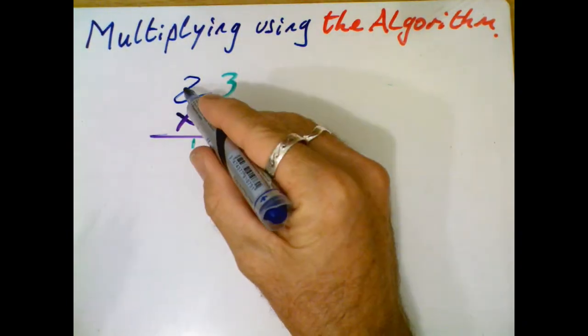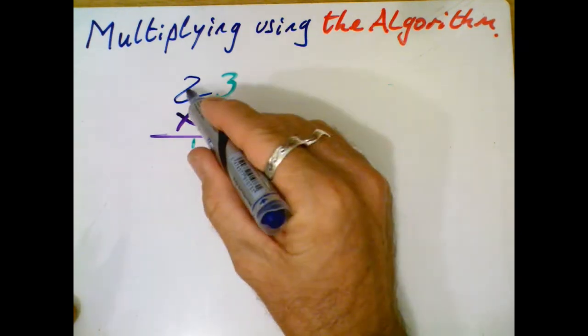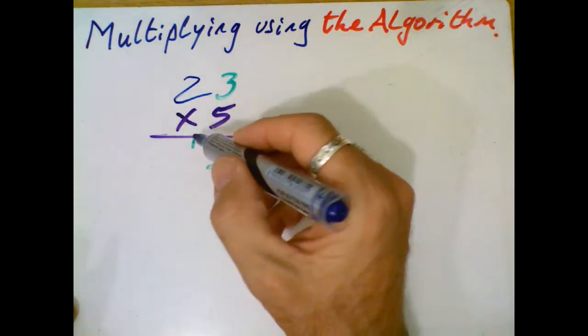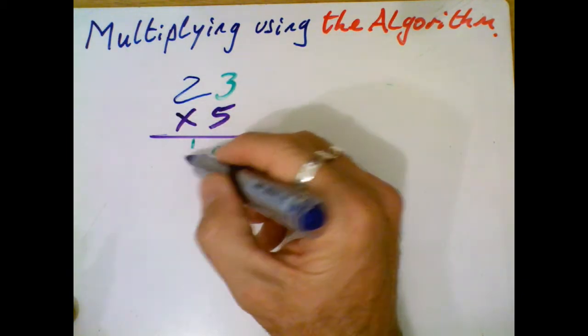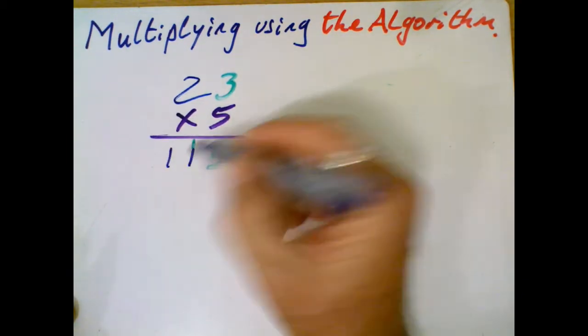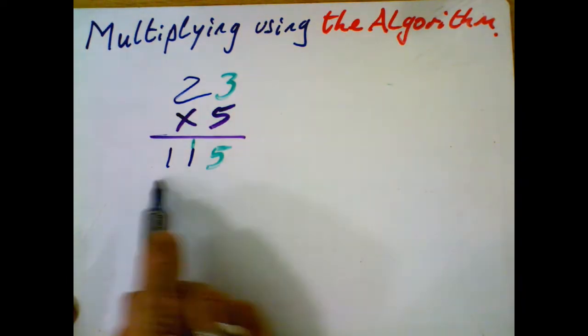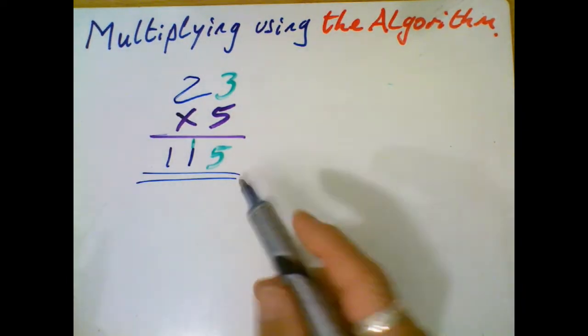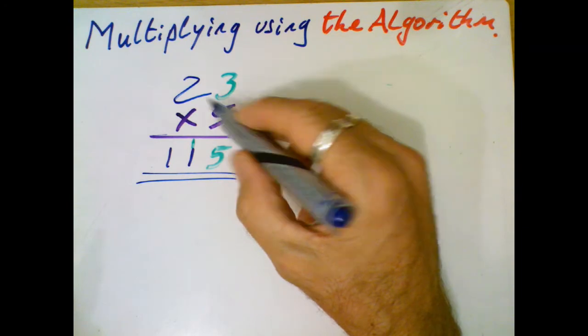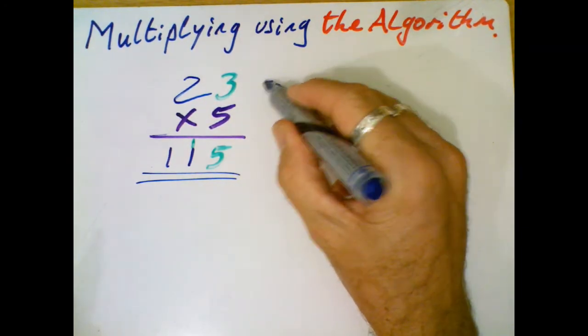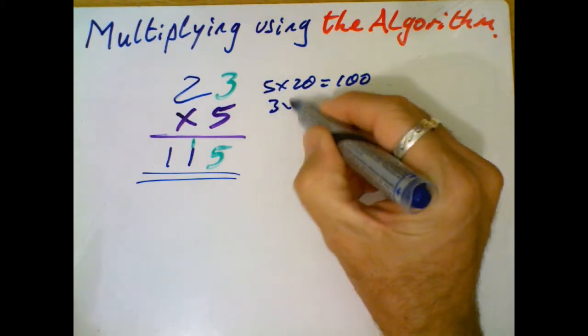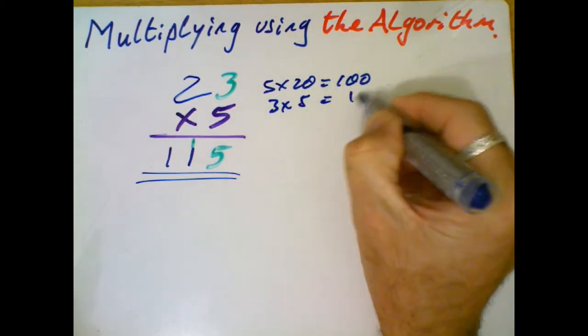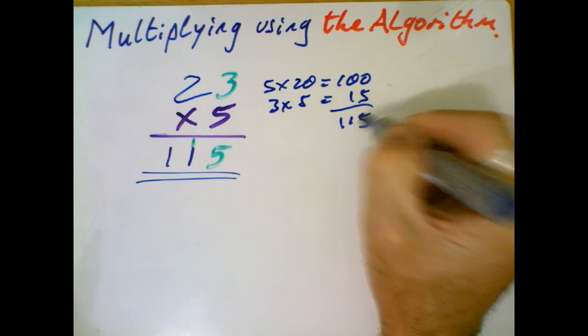And then we got 2 times 5 is 10, so 20 times 5 is 100. So we're going to write it down this column. 2 times 5 is 10, but I got another 10 here, so I got 11. So the answer here is 115. We could do a quick check, couldn't we? Because we could do like 5 times 20 equals 100, and 3 times 5 equals 15. 115. I got it right.